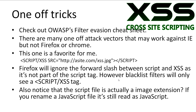There are many one-off tricks that may work against certain filters in certain browsers. I suggest looking at the OWASP filter evasion cheat sheet for an idea about how they work. My favorite is a malformed script tag that will pass a lot of blacklist filters but still execute in browsers that ignore unknown characters in known tags. You may also notice that the script file that is linked to has an image extension — if you rename a javascript file, the web browser will still try to execute the file as javascript no matter what extension it has.